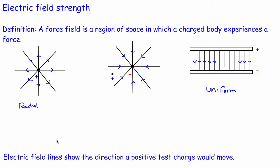The arrows are defined so that they show the direction a positive test charge would move in. It's exactly the same for a uniform field: if we have a positive plate and a negative plate and put a positive charge between them, it will be repelled from the top and attracted to the bottom, so it moves downwards. So the electric field is a vector — it has direction.